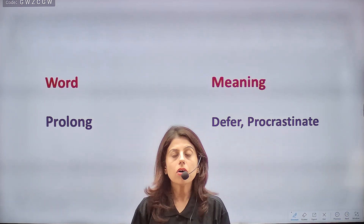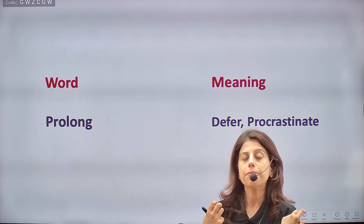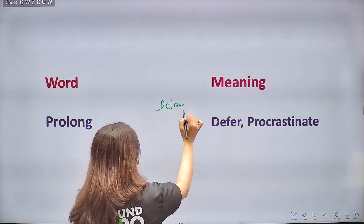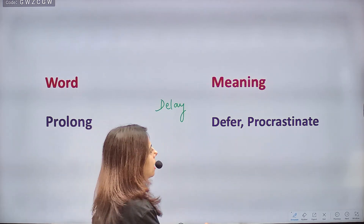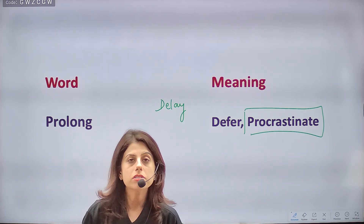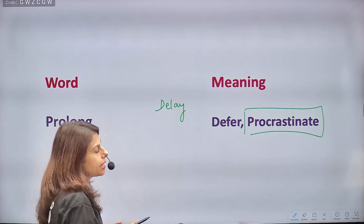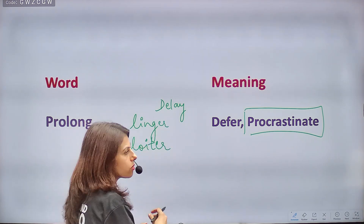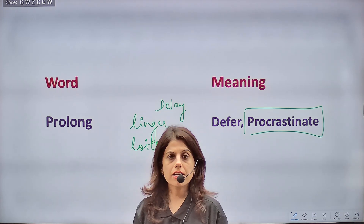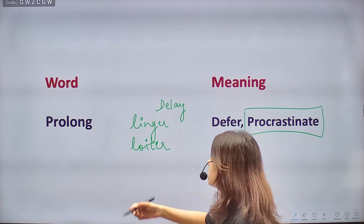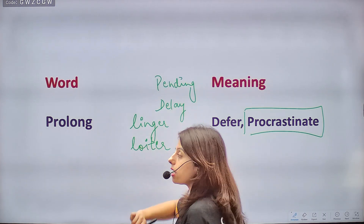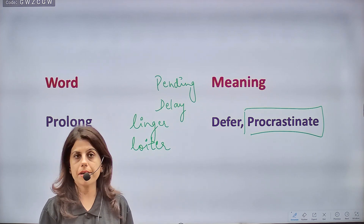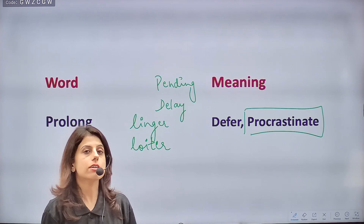Next word is PROLONG — when we stretch something unnecessarily. If a work was to be done in one day but you took three days, you prolonged it. You delayed it, kept it pending. Synonyms: delay, defer, procrastinate (very good word — please learn this), linger, loiter. Antonyms: timely, opportune — doing things on time.